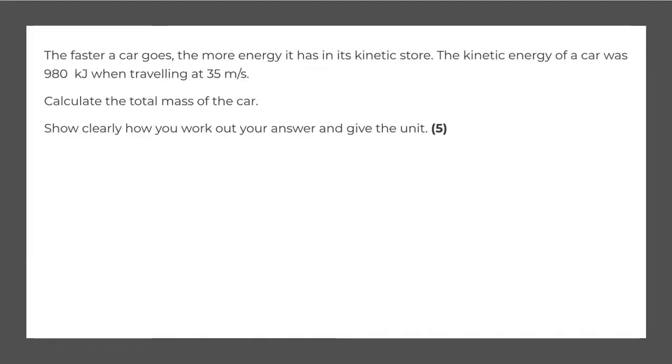Our first exam question states the faster a car goes the more kinetic energy it has in its kinetic store. The kinetic energy of a car was 980 kilojoules when traveling at 35 miles per second. Calculate the total mass of the car. Show clearly how you work out your answer and give the unit. And it's worth five valuable marks.